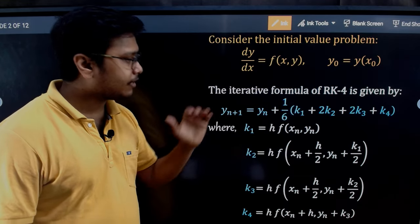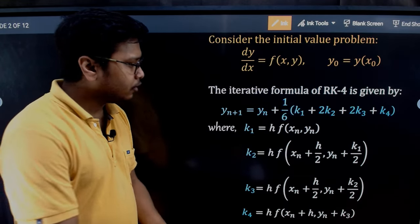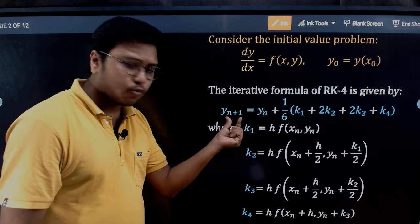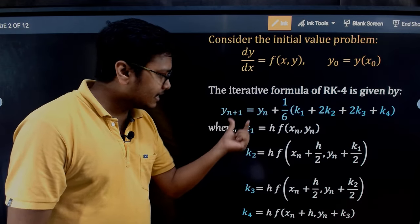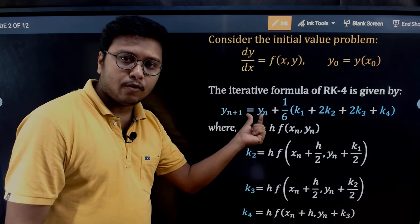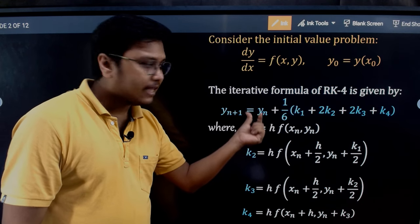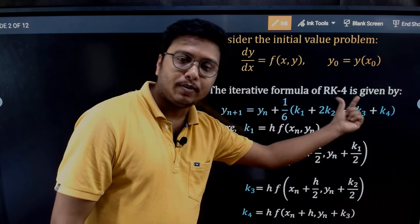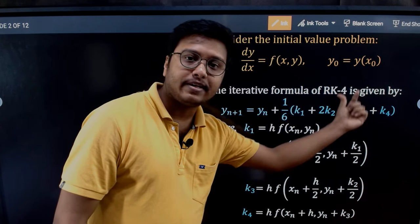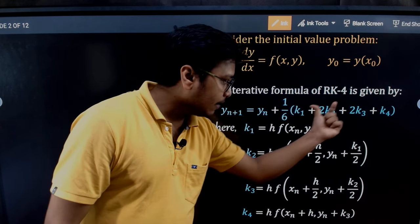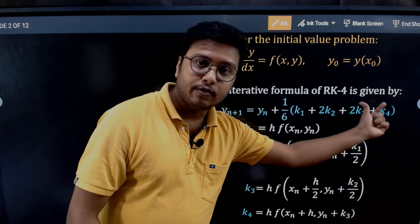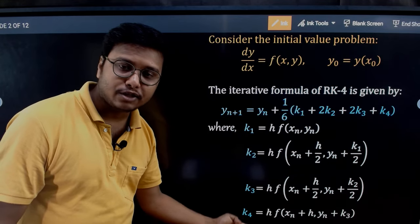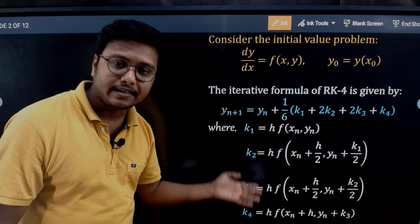The iterative formula of RK4 looks like this: the (n+1)th step of y_n is given by the nth value of y plus 1/6 times (k1 plus 2·k2 plus 2·k3 plus k4), where k1, k2, k3, and k4 are given by iterative equations.